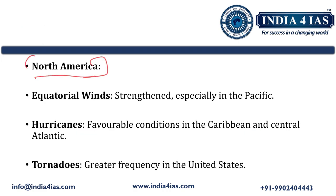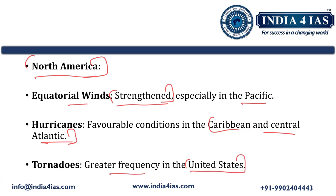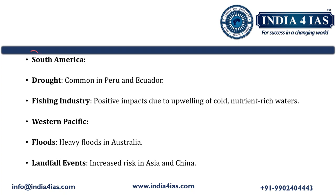The impact of La Nina in North America: equatorial winds are strengthened, especially in the Pacific region. La Nina conditions are favorable for the formation of hurricanes in the Caribbean and central Atlantic region. There is also a greater frequency of tornadoes in the United States of America. This is entirely the reverse of what is happening in the European region.